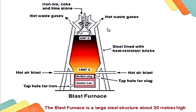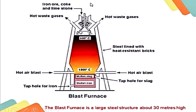This is the main diagram of the blast furnace. It consists of a tall tower about 30 meters high, lined inside with heat-resistant bricks to insulate the heat, and lined with steel on the outside. A lot of hot air is put inside. From the top, we put iron ore (Fe2O3), coke (C), and limestone (CaCO3).